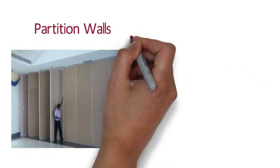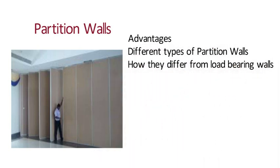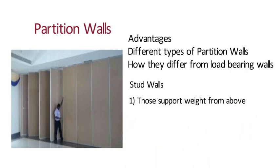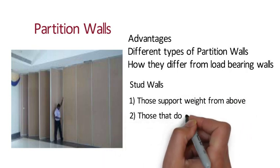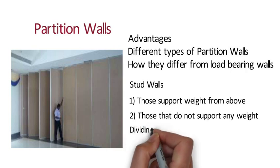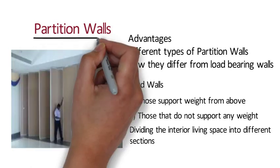In this video we are going to discuss about partition walls, their advantages, their different types, and how they differ from load bearing walls. Partition walls are also known as stud walls. Normally homes have two different types of walls: those that support weight from above, and those that do not support any weight. Most exterior and few interior walls are load bearing, but others serve just to divide the interior living space into different sections. Such walls are known as partition walls.